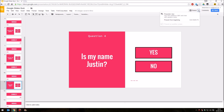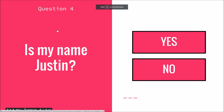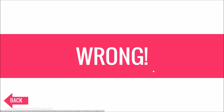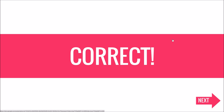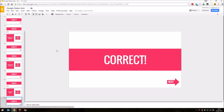So if I now present this from this question, here it is. Is my name Justin? And again, you'll see that wherever I click on this slide, it doesn't send me on to the next slide. I have to click on these buttons here. Let me click on no, which is the wrong answer. And so it tells me wrong. Clicking anywhere on this slide does not do anything. I have to click the back button. I click on back. Have another go at this question. Let's say yes. And there we are. I've got it correct.